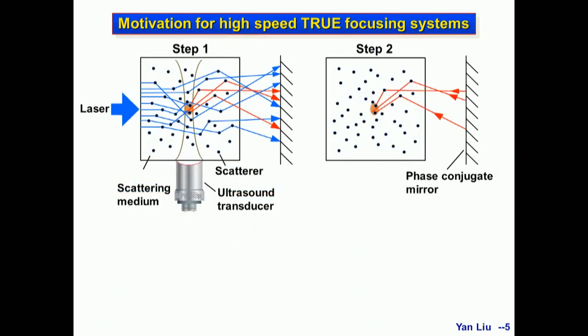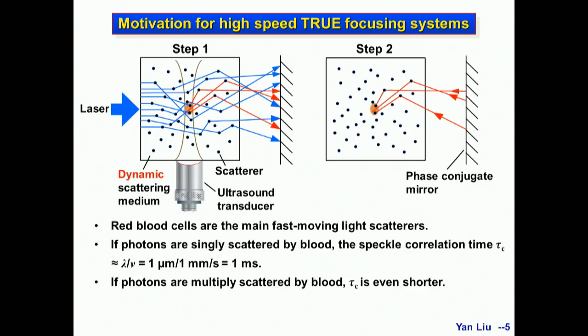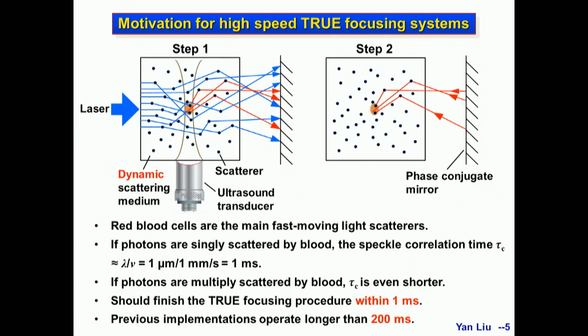Using this phase conjugate mirror, we can achieve the equivalent time reversal so the ultrasound tagged photons trace their trajectory back to the ultrasound focus to form an optical focus. Biological tissue is not only a scattered medium but also a dynamic one, where light scatterers keep moving due to physiological motions such as breathing, heartbeat, and blood flow. Red blood cells are the main fast-moving light scatterers. The spectral correlation time tau_c, which quantifies how fast the light pattern changes, can be estimated as lambda over velocity, on the order of one millisecond — even shorter with multiple scattering. So ideally we should finish the TRUE focusing procedure within one millisecond. However, previous implementations operate longer than 200 milliseconds, which is much longer than the requirement, providing strong motivation to develop high-speed TRUE focusing systems.